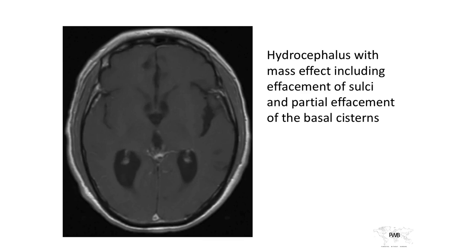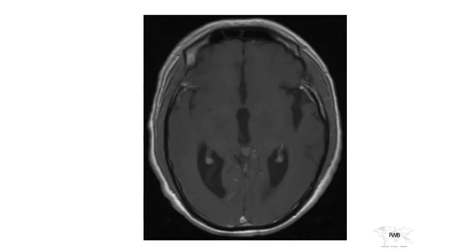Looking at his imaging, this is read as showing hydrocephalus with mass effect, including effacement of the sulci and partial effacement of the basal cisterns. Normally you'd see a little irregularity here, but this is almost smooth — that's the effacement we're talking about. Here's another image showing it as well. You're going to have enlargement of the cisterns and then smoothing.